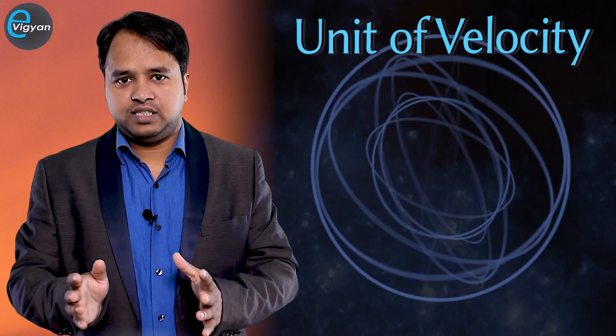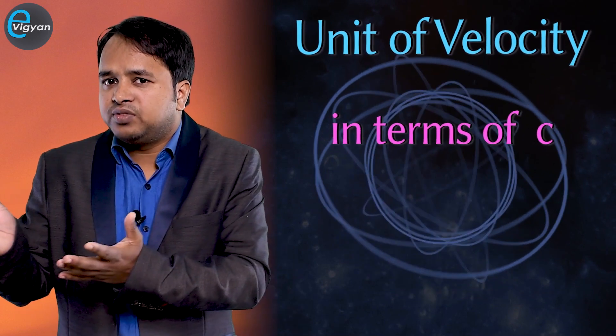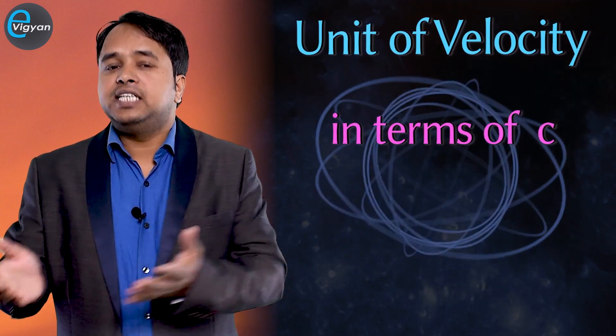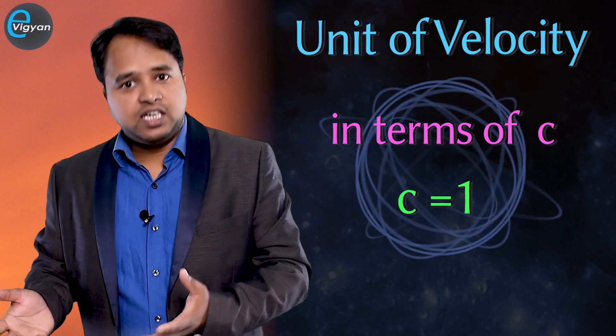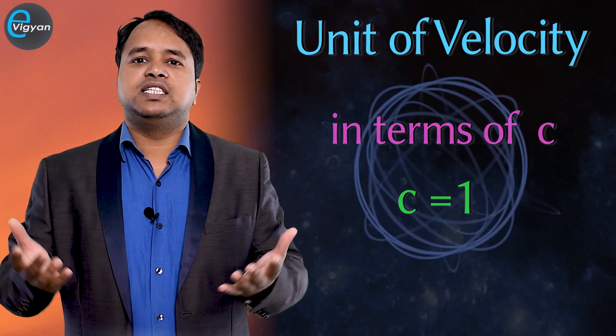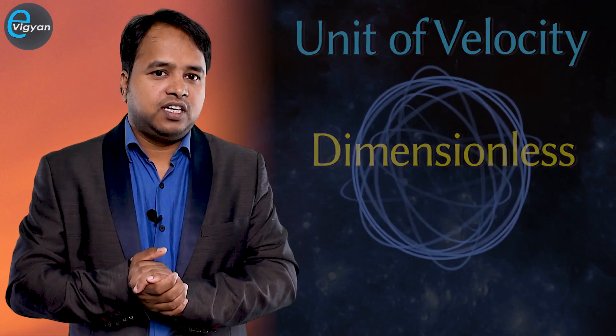Now let's find the natural unit of velocity. Velocity can be measured in terms of c, and in natural units c is equal to 1, which is a constant. So velocity is dimensionless in natural units.